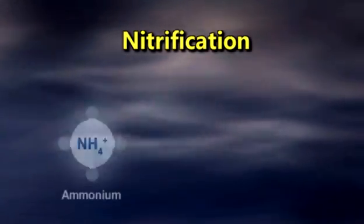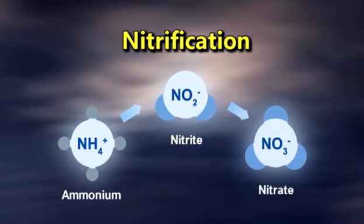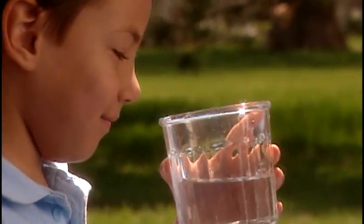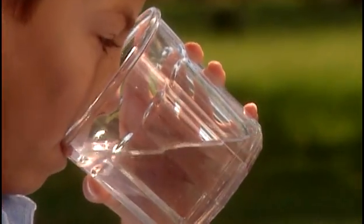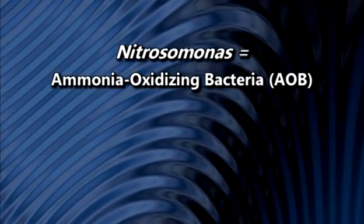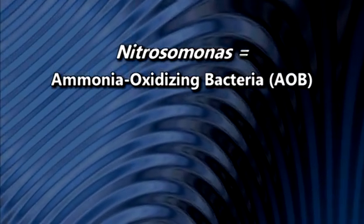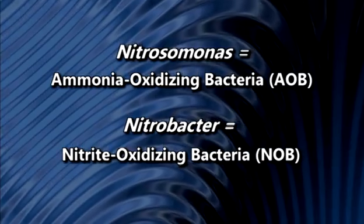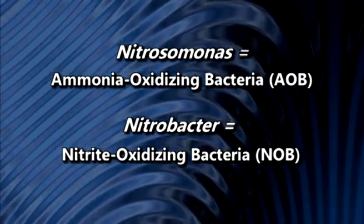Nitrification is a biological process where bacteria convert free ammonia first to nitrite and then to nitrate. Ammonia is present in drinking water naturally or by ammonia addition during secondary disinfection to form chloramines. Nitrification occurs in two steps: first, the conversion of free ammonia to nitrite by Nitrosomonas, ammonia oxidizing bacteria that are common in soils and the environment; and second, Nitrobacter, nitrite oxidizing bacteria, then convert nitrite to nitrate.